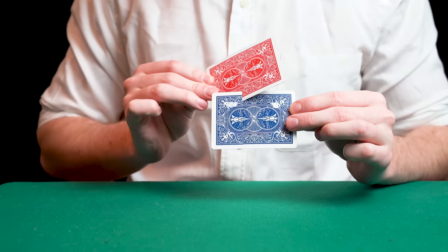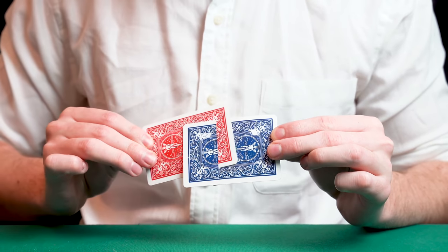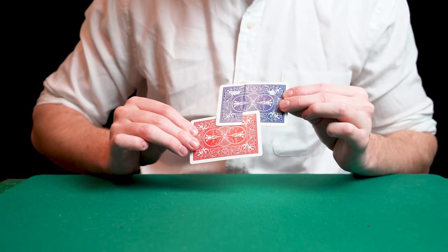The magician has two playing cards. The red card cleanly melts straight through the blue card.